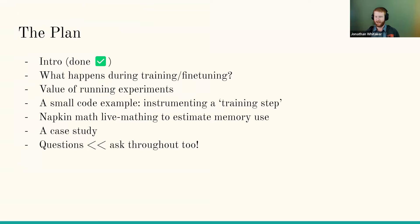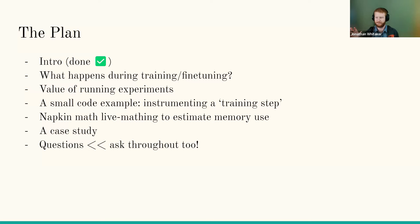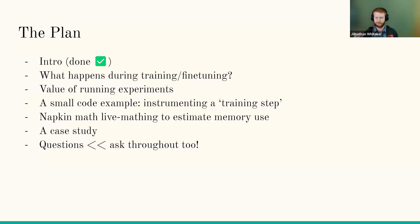Here's the plan: we'll go through the objectives — that's the intro we've just done. We'll talk about what happens during fine-tuning to understand the pieces we should keep an eye on. We'll talk about how to run experiments to interrogate these questions, and we'll do napkin math to make predictions before running experiments. I'll show code for smaller-scale experiments, then dive into a case study to surface more questions around nitty-gritty details, with lots of time for questions.